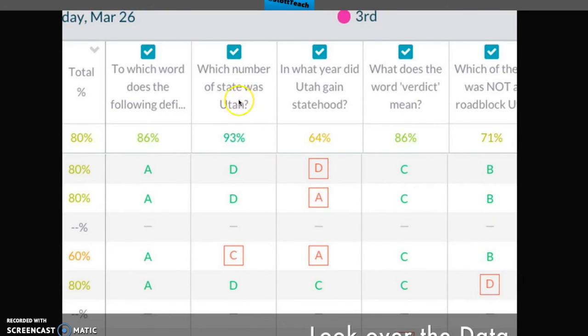You can also go by question and see, oh, they did good on this question, but this question was probably the hardest question that was asked. So, you might need to go back and reteach that subject. You can also see the overall score for every student for the whole class right here.